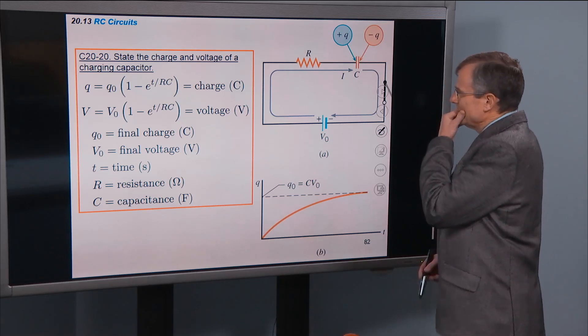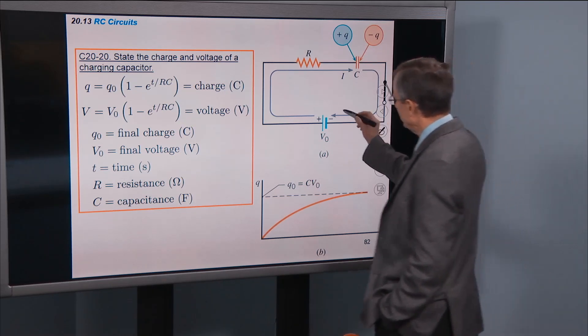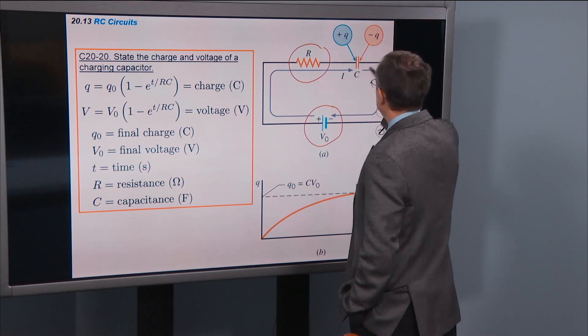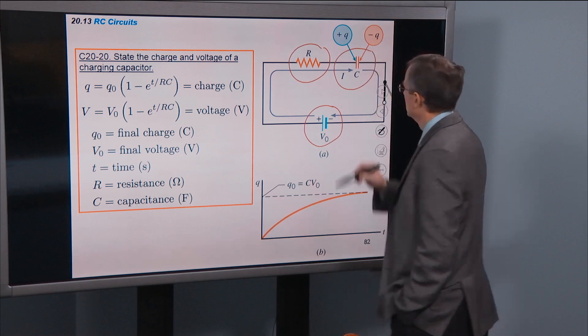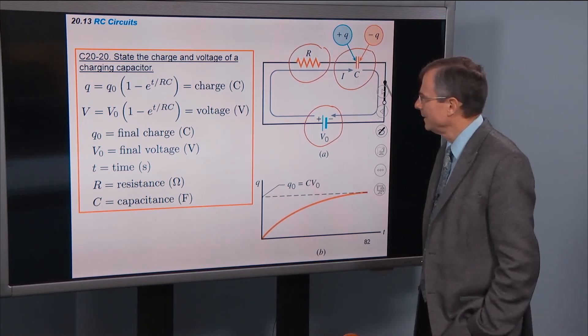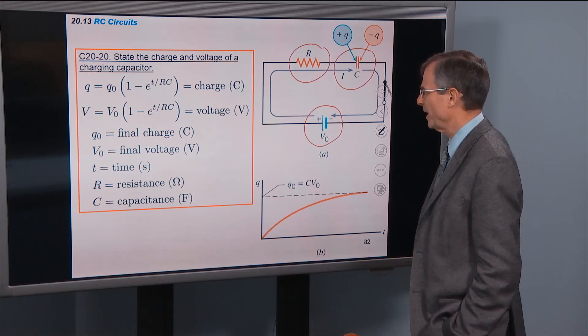This is relevant to the lab that you'll be doing in this area. The idea here is you're going to have a battery, a resistor, and a capacitor. That's why they call it an RC circuit - RC because it has an R in it, a resistor, and it has a capacitor.